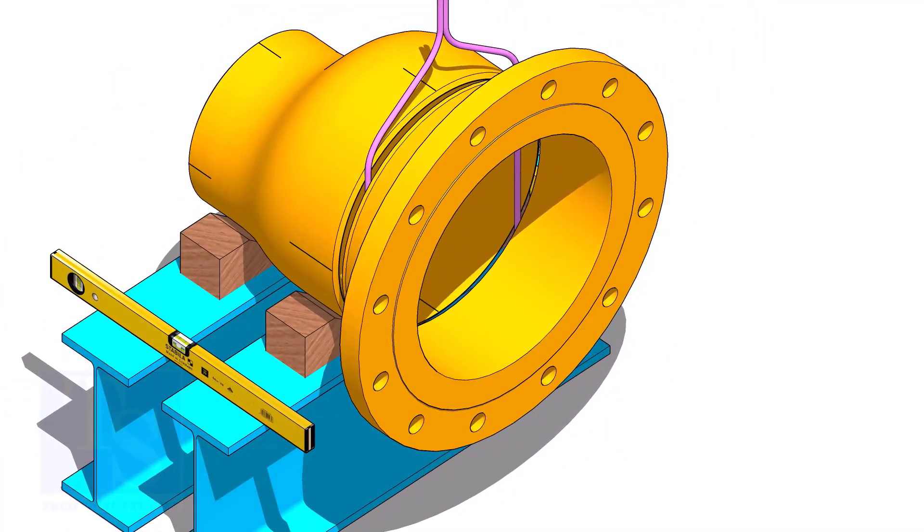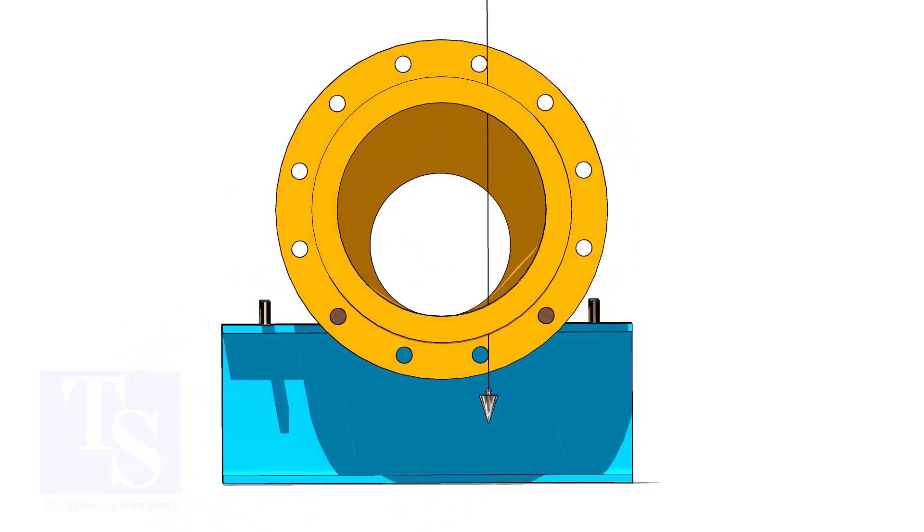Put flange in the gap rod. Arrange proper supports below the flange. Plumb the flange through the holes as shown.